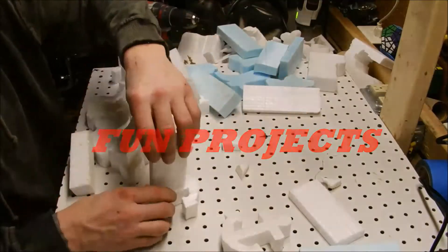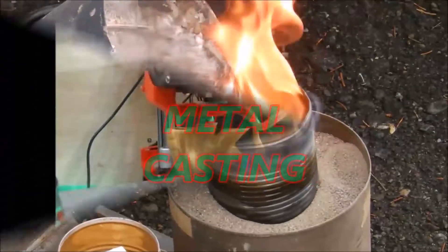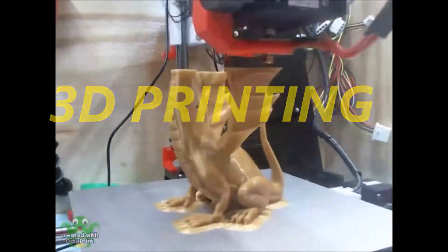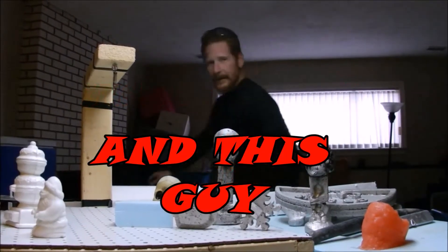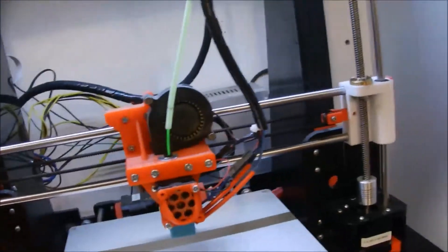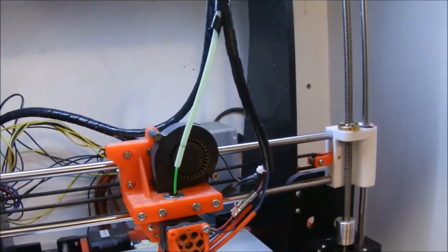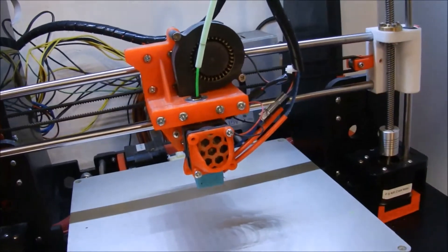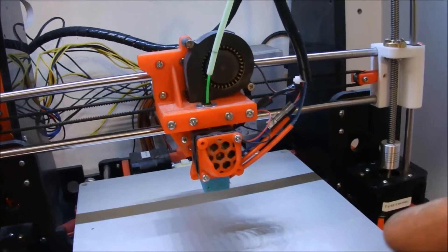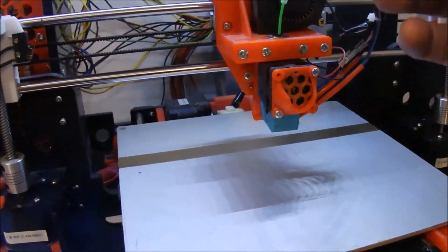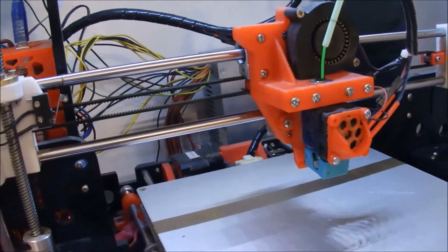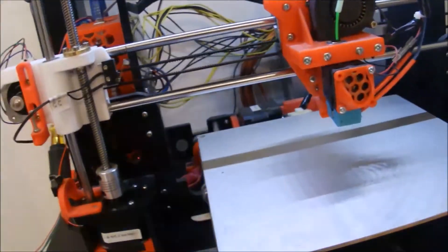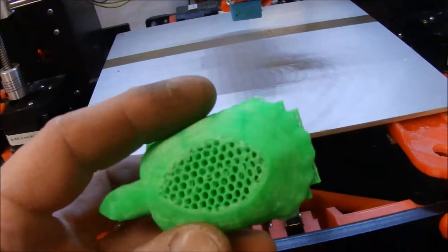All right, so this happened last night. Printed some red, printed this little turtle and it printed great. I put in some glow-in-the-dark green and I come back and it had totally failed.